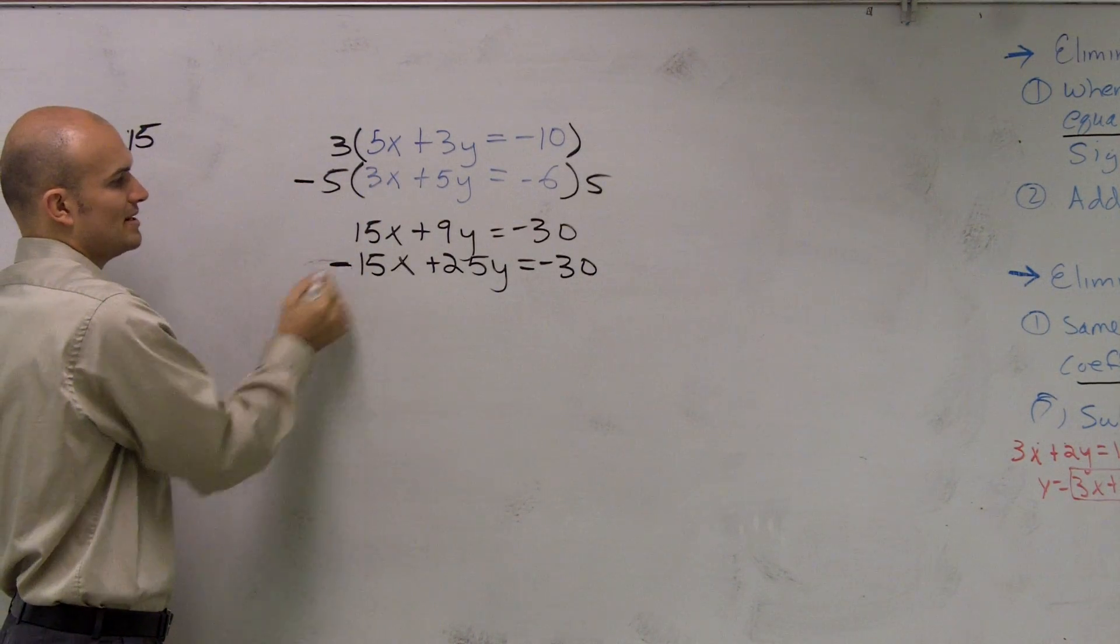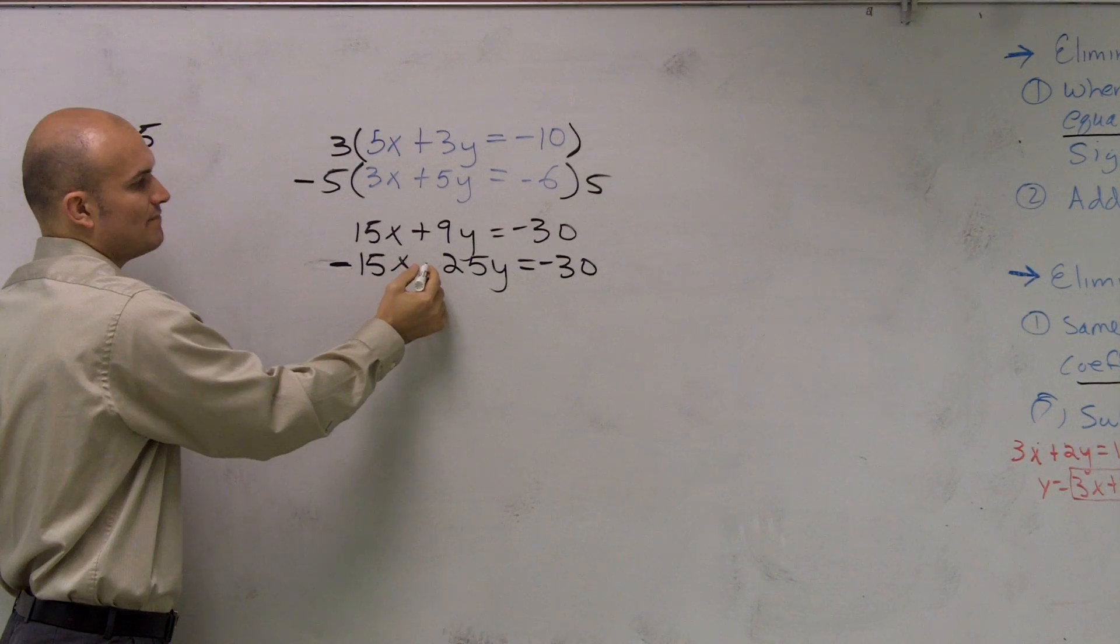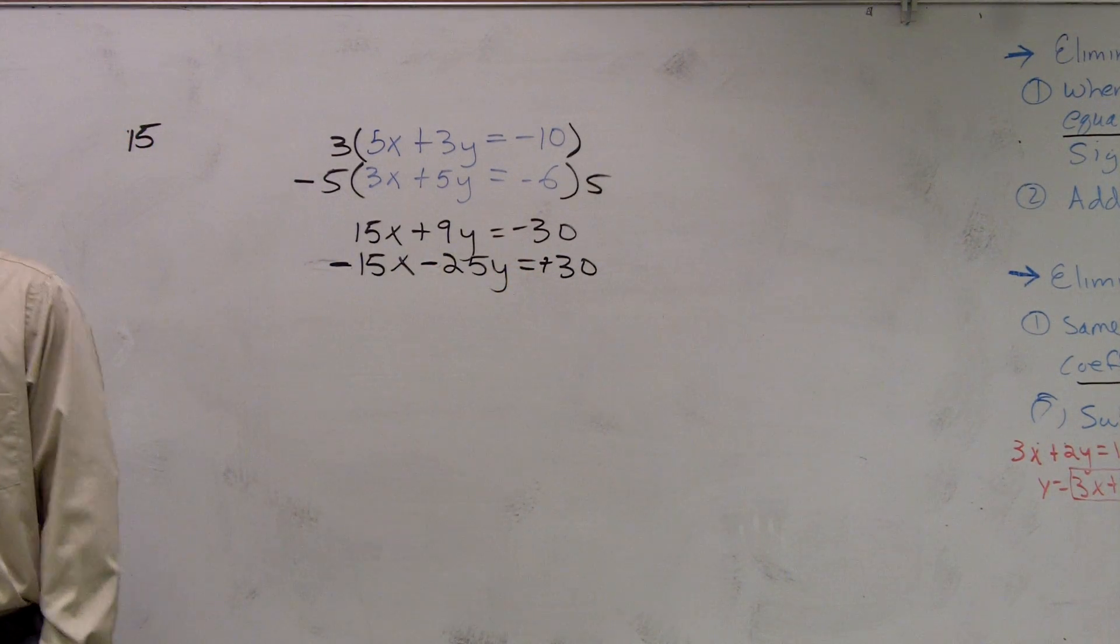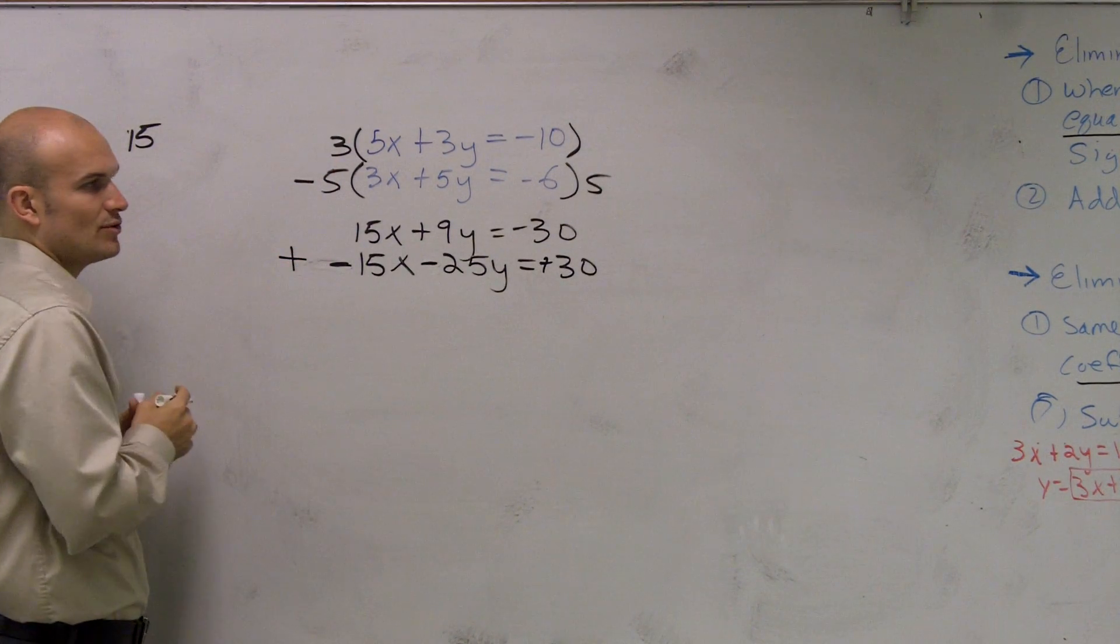So then negative 5 times 15 would be negative 15x. Negative 5 times positive 5 would be negative 25. And then this would become a positive 30. I think it's much easier to multiply by a negative so that I can add my two equations.